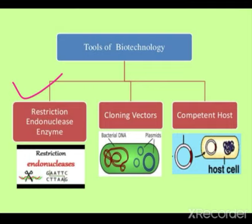Today we will see the diagrammatic representation of rDNA technology. Diagrammatically, we will see that there are many DNA desired fragments isolated after cutting, which we can arrange because the sizes differ — some are larger, some are smaller. Based upon their molecular size we can arrange them with the help of gel electrophoresis. So these are the two things we are going to see today.